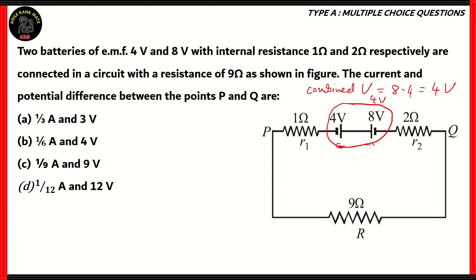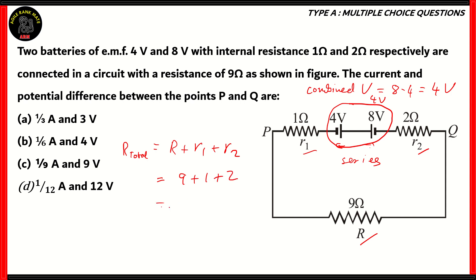Next, we need to find out the total resistance. We have R1, R, and R2. All of these are connected in series. So the total resistance R_total is equal to R plus R1 plus R2, which is equal to 9 plus 1 plus 2, which is equal to 12 ohms. So the total resistance is 12 ohms and the combined voltage is 4 volts.